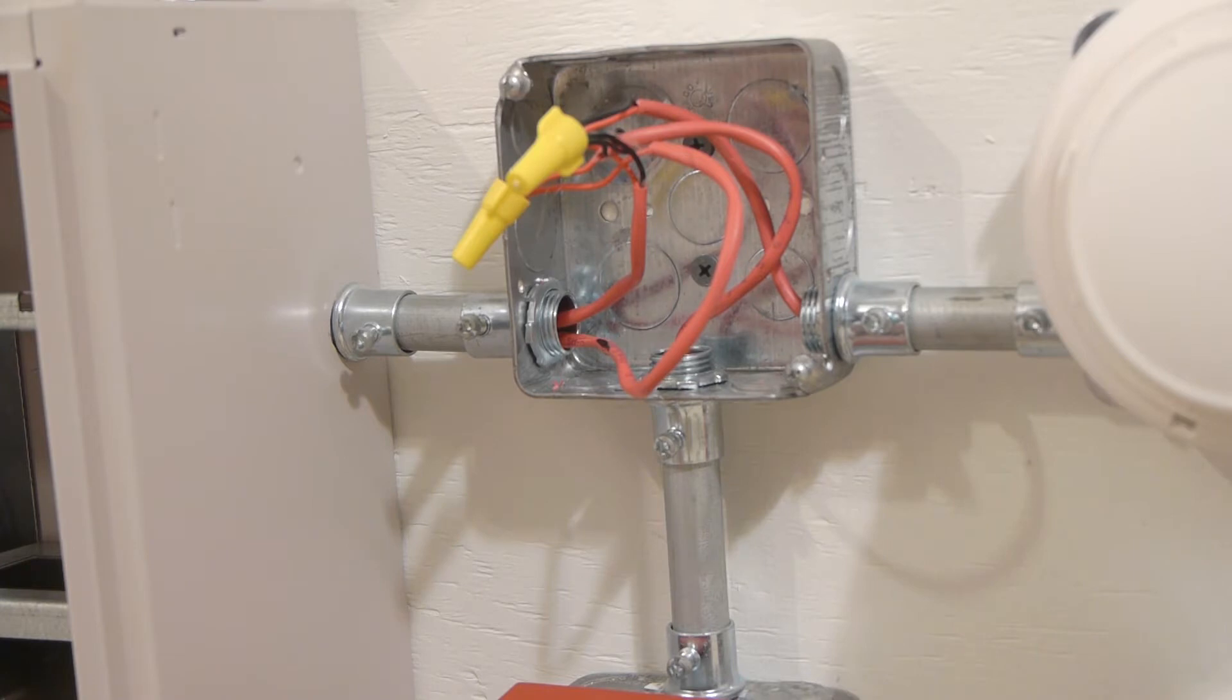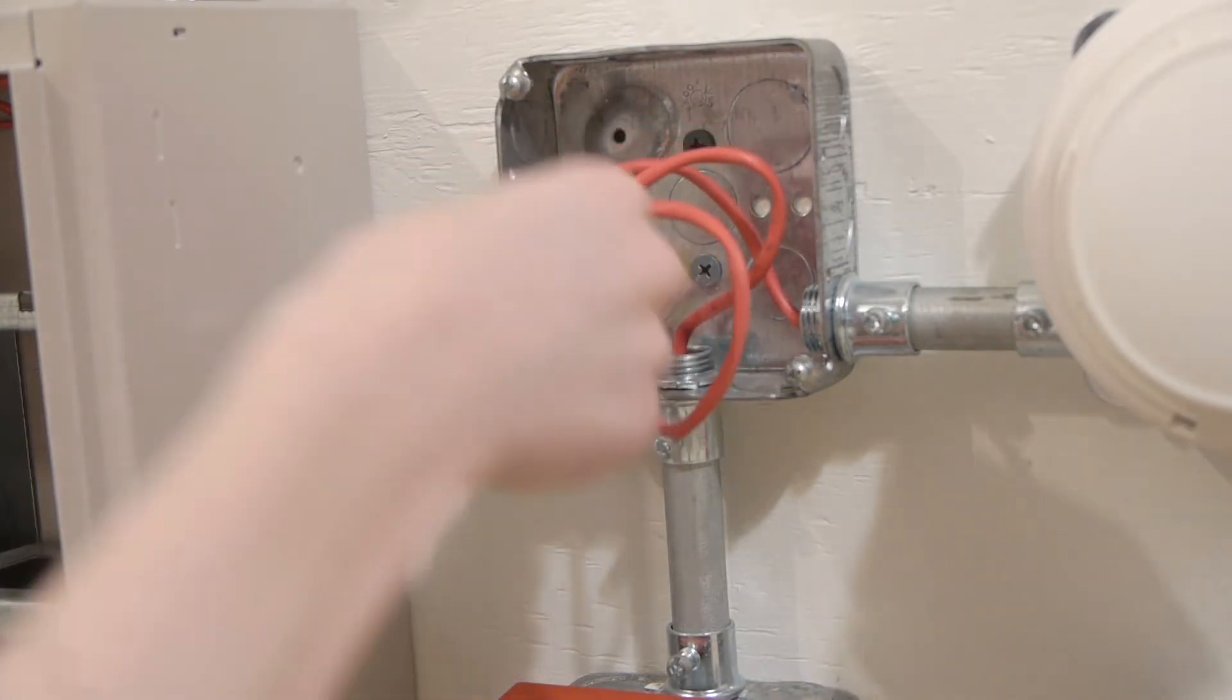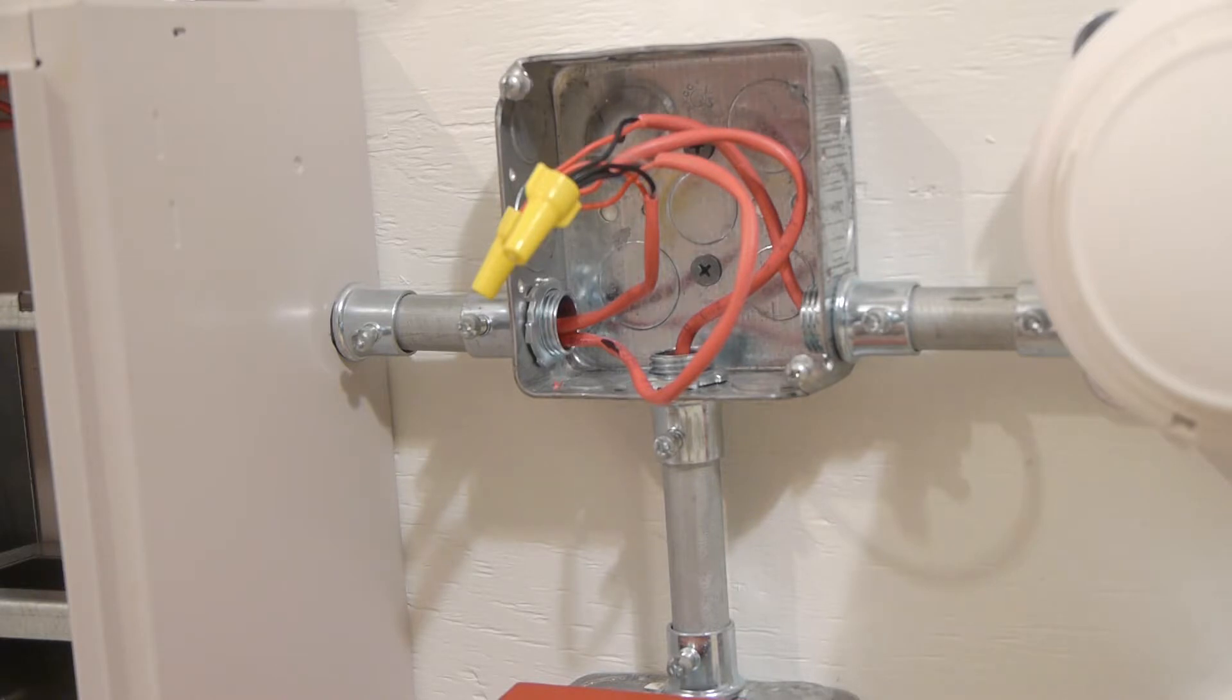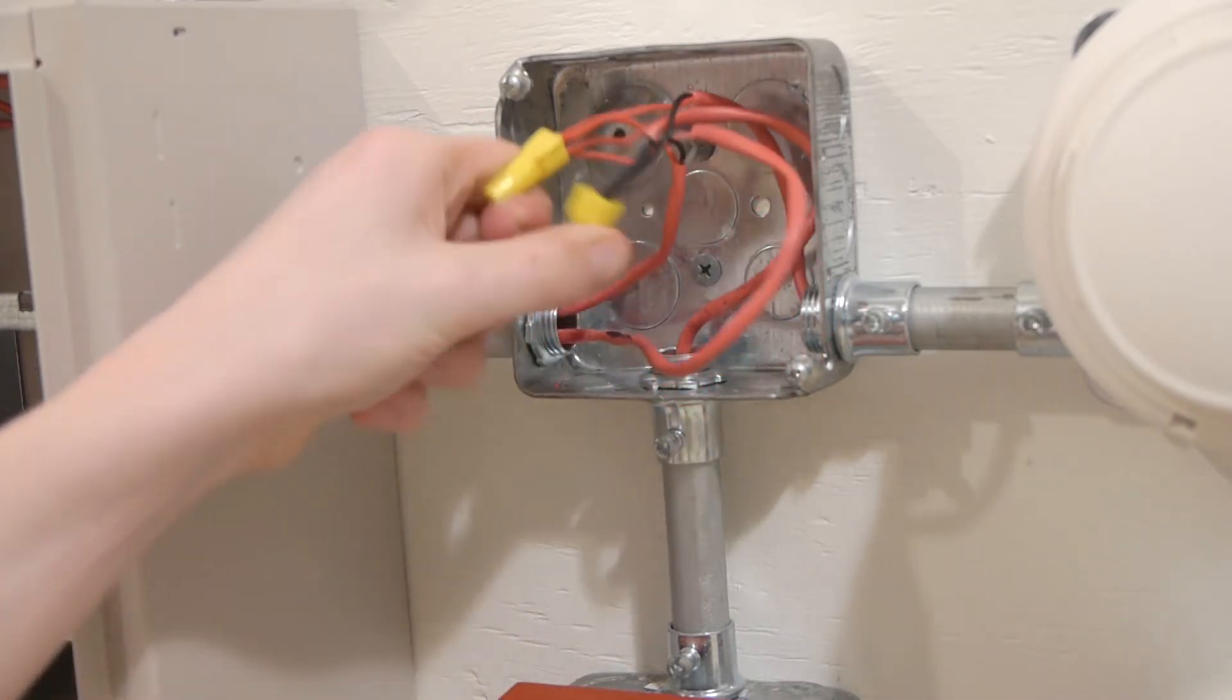Since we know it's a negative earth ground fault, we're going to pull apart the negative wire nut here. If you don't have a Simplex 4010 or your panel doesn't show if it's a negative or positive earth ground fault, just do the same thing I'm doing but with the positive and negative.